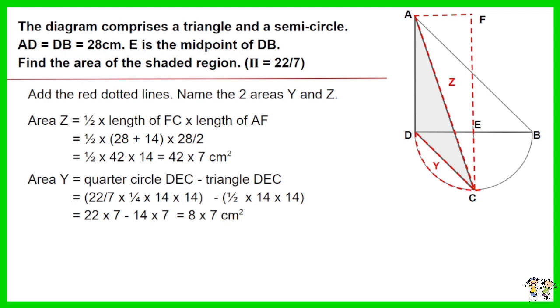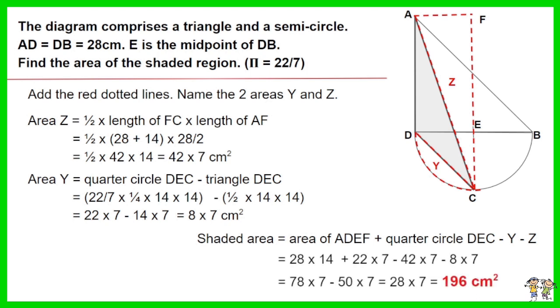Area Y equals quarter circle DEC minus triangle DEC. Work out the equation. You have 8 times 7 centimeters squared. Shaded area equals area of ADEF plus quarter circle DEC minus Y minus Z. Work out the equation. Your answer is 196 centimeters squared.